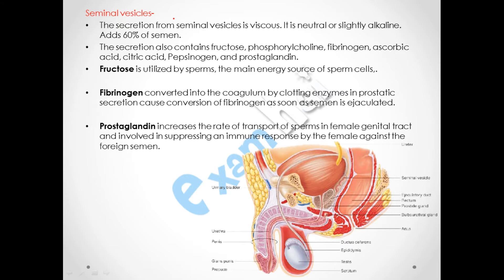Now we will discuss the seminal vesicle. The male reproductive system contains testes and accessory ducts. The accessory ducts add semen to the sperm to provide motility. Sperm is formed inside the testes, and semen is formed by the constituents secreted by the accessory ducts. The seminal vesicle adds 60% of its constituent into the semen, as seen in this diagram.